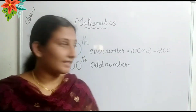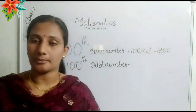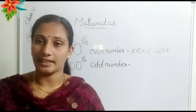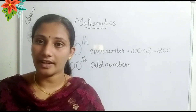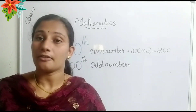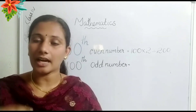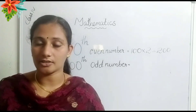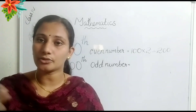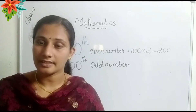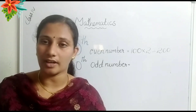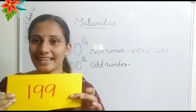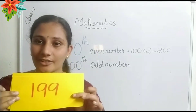Then which one is the hundredth odd number? How do we find? First, let us find the double of hundred. Hundred into two is equal to two hundred. Then minus one — that is one hundred and ninety-nine.